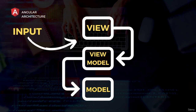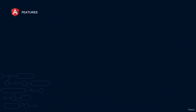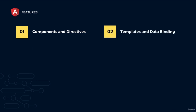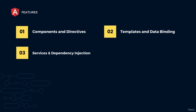Now we will proceed to the features of Angular. The first feature is components and directives — components provide a way to create custom elements, while directives enable developers to manipulate the DOM and extend its behavior. Next, templates and data binding: templates define the structure and layout of the user interface, while data binding allows developers to connect data in the component to the template and enable two-way communication. Services and dependency injection allow encapsulation of functionality across multiple components while enabling automatic dependency resolution and promoting code modularity and reusability.